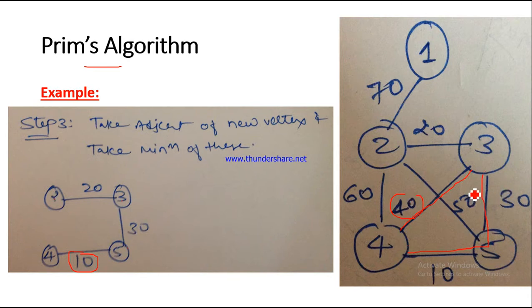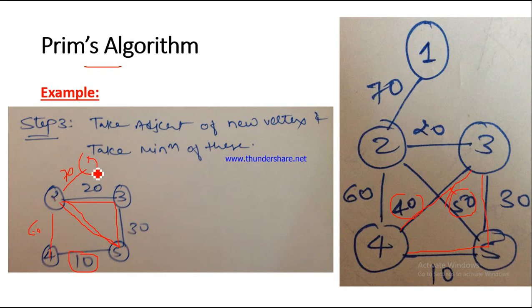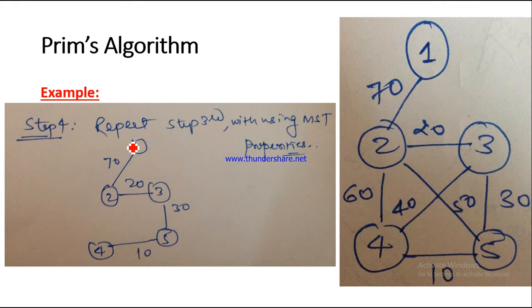We also consider edge 2-to-5 with cost 50, but we already have nodes 2 and 5, so joining them would again make a loop — we ignore it. Edge 2-to-4 with cost 60 would also create a loop, so we ignore that too. We are left with edge 1-to-2 with weight 70. After joining that we have our complete spanning tree because we have visited all nodes: 1, 2, 3, 4, and 5.